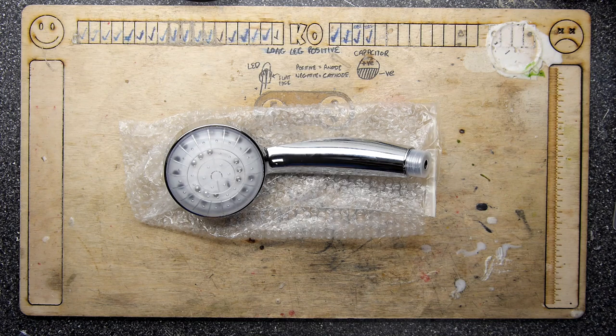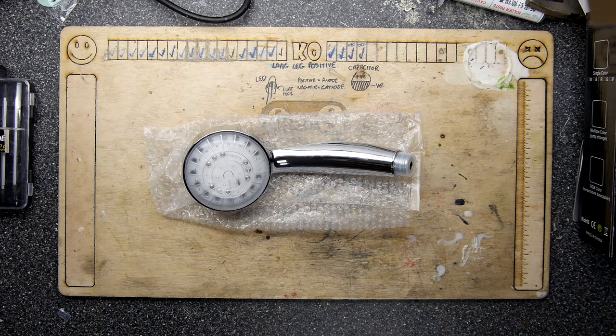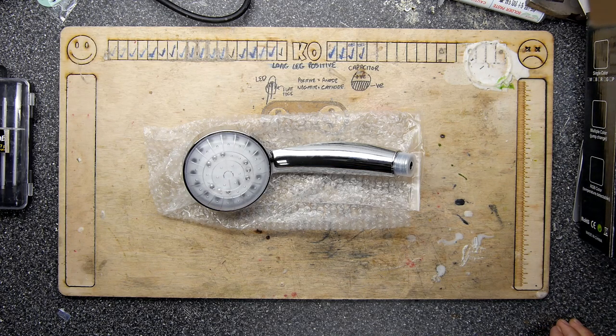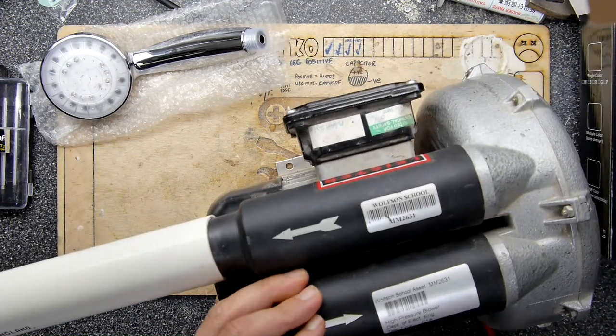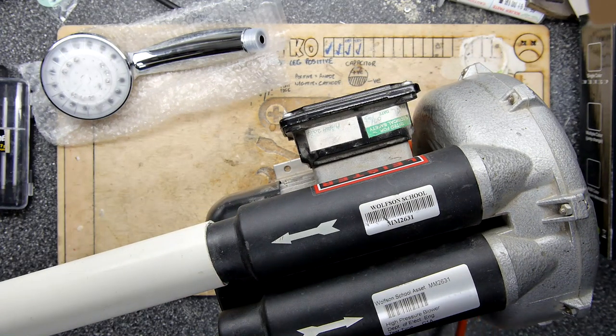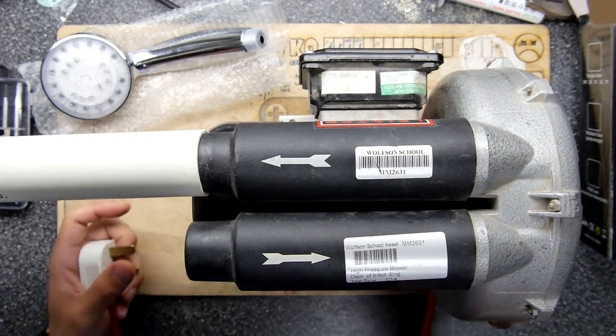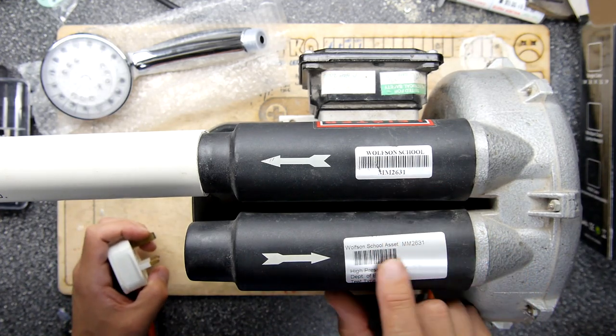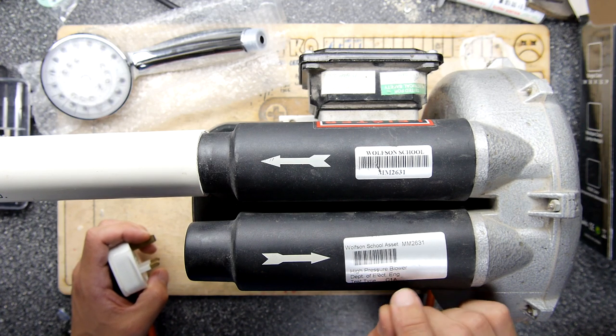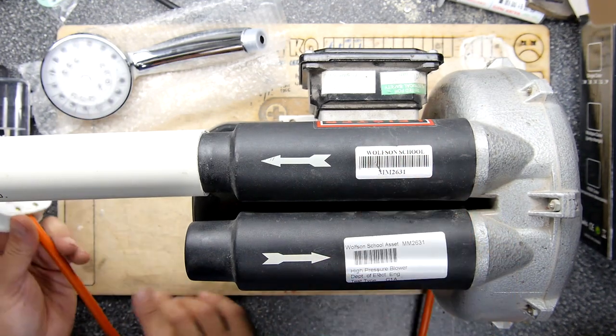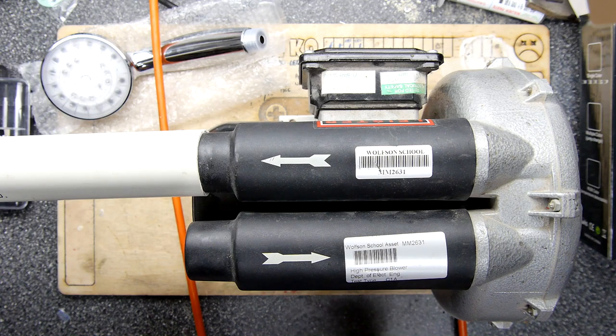To help me with this I have a special machine. I have to admit it is a bit heavy. This is something I salvaged from a skip. You can see it's from Loughborough Wolfson School in Loughborough University, asset MM 2631, high pressure blower, department of electrical engineering.